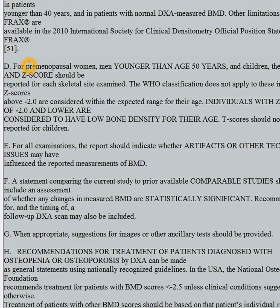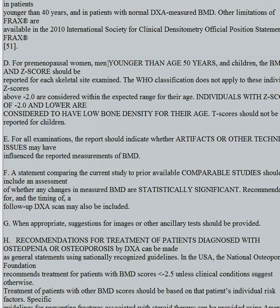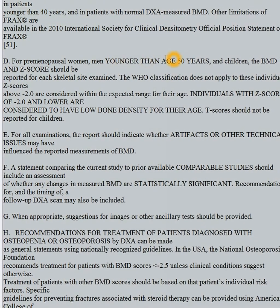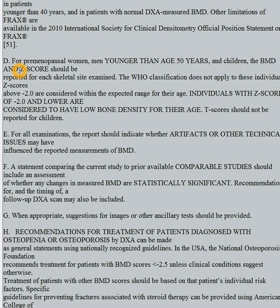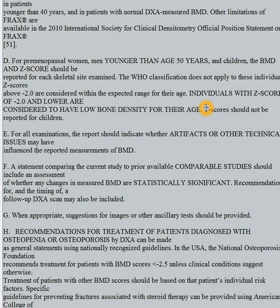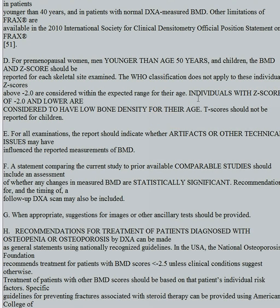For people younger than 50 — technically premenopausal women or men younger than 50, but we use everybody under 50 or children — T-scores are not valid. You only use Z-scores. Never report T-scores for children or anybody under 50. Instead, report Z-scores. The normal ranges are different, and the template has that range on it, but individual Z-scores of less than negative two are considered abnormal and indicate low bone density.